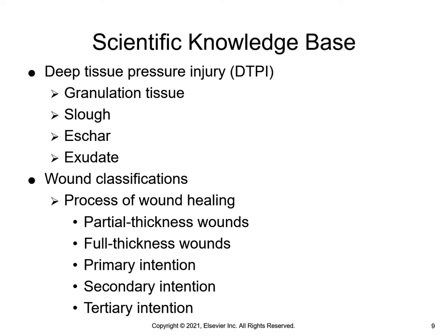Deep tissue pressure injuries present as persistent, non-blanchable, deep red, maroon, or purple discoloration. Intact or non-intact skin with a localized area of persistent non-blanchable discoloration, or epidermal separation revealing a dark wound bed or blood-filled blister. This injury results from intense or prolonged pressure and shear forces at the bone-muscle interface. The wound may evolve rapidly to reveal the actual extent of tissue injury or may resolve without tissue loss.